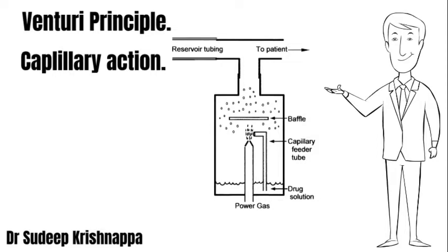The subatmospheric pressure which is generated continuously suctions or sucks up the fluid present in the chamber by capillary action. The moment the liquid reaches the orifice, the jet shatters this liquid against the baffling present internally, generating aerosols. This creates a mist which accumulates in the upper end of the chamber and subsequently moves on towards the patient.